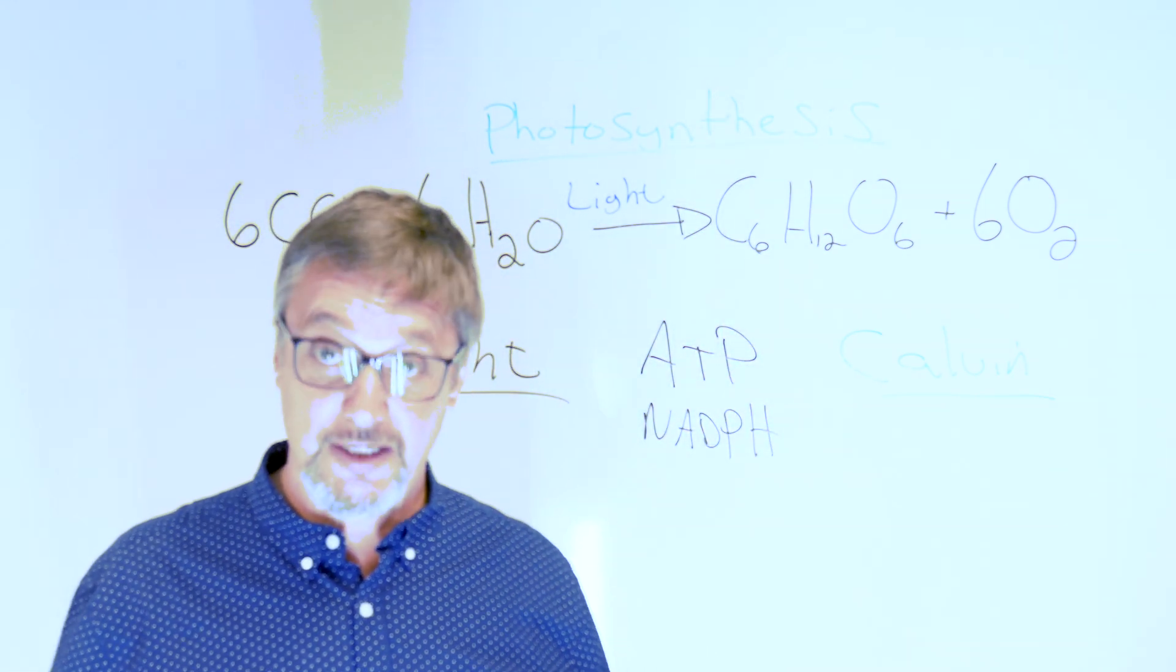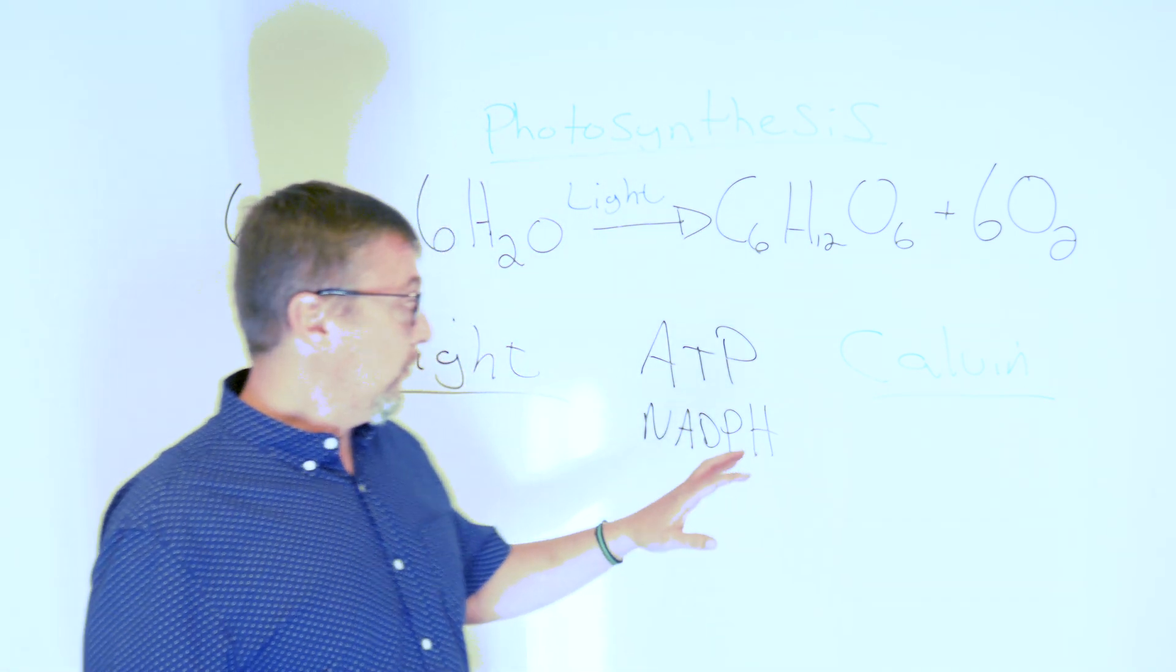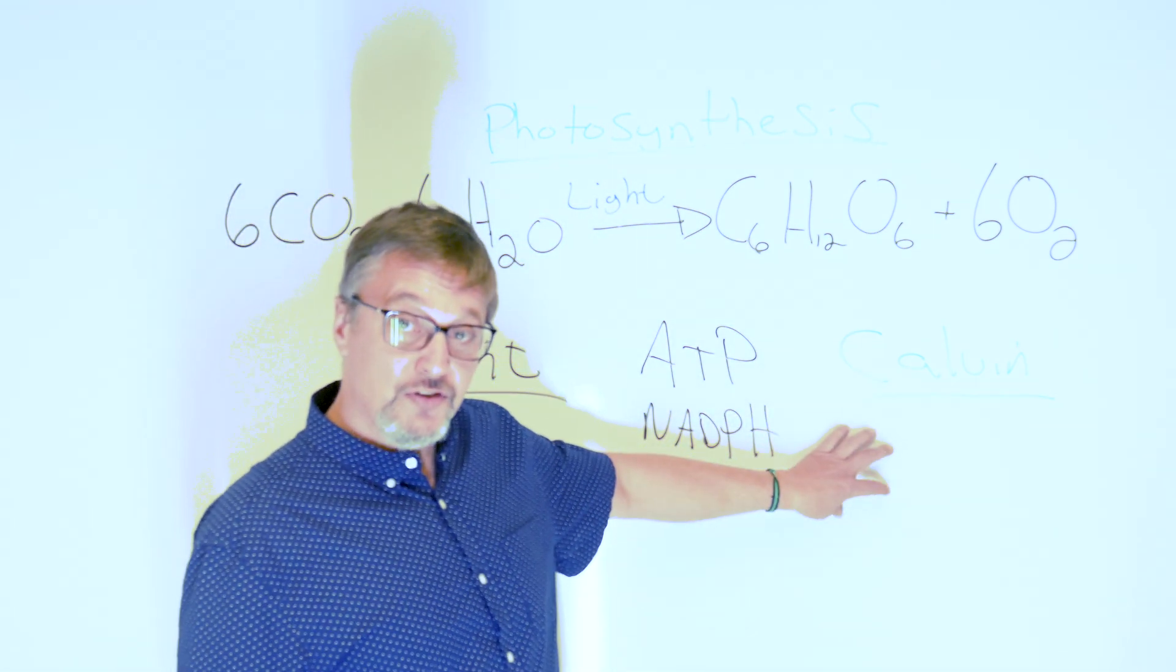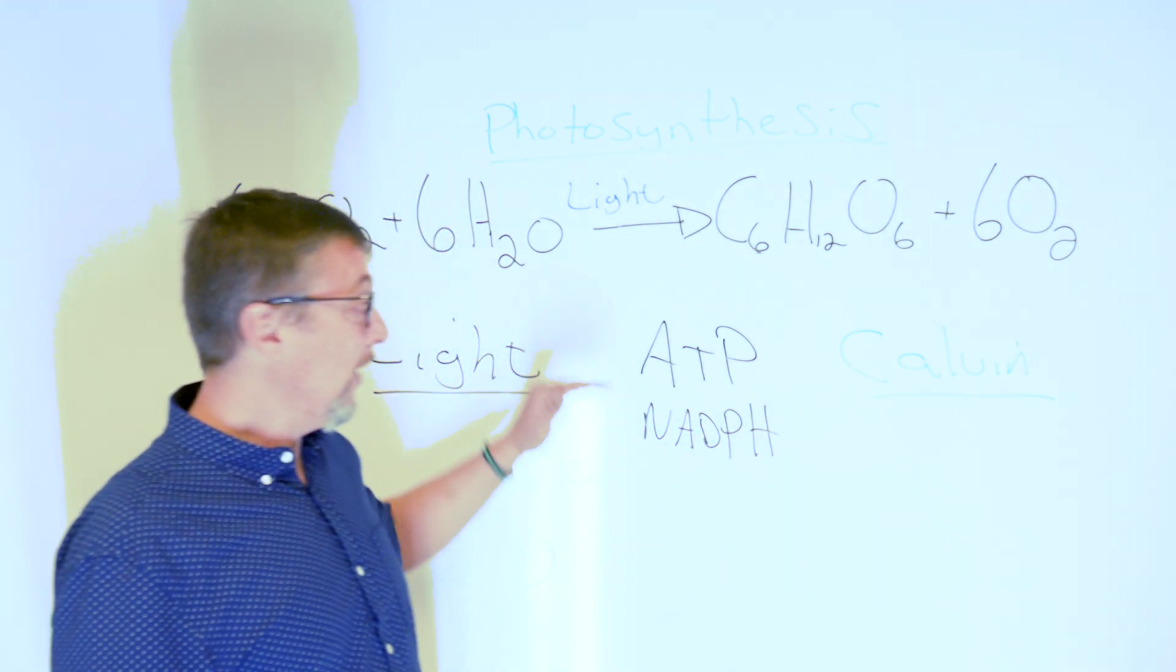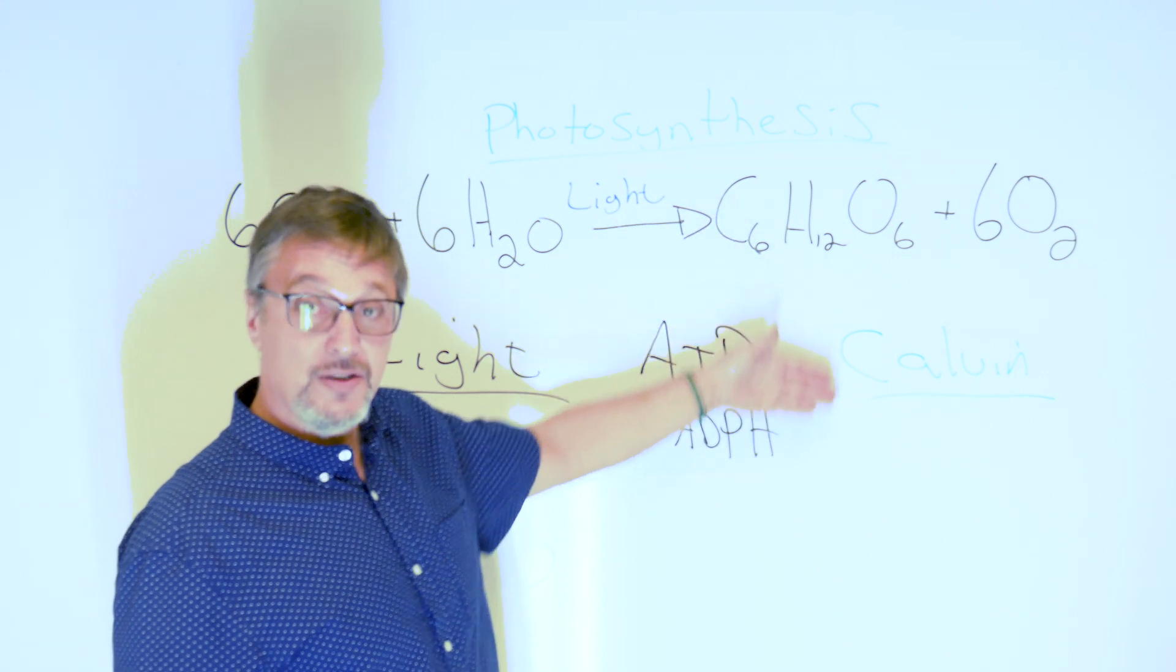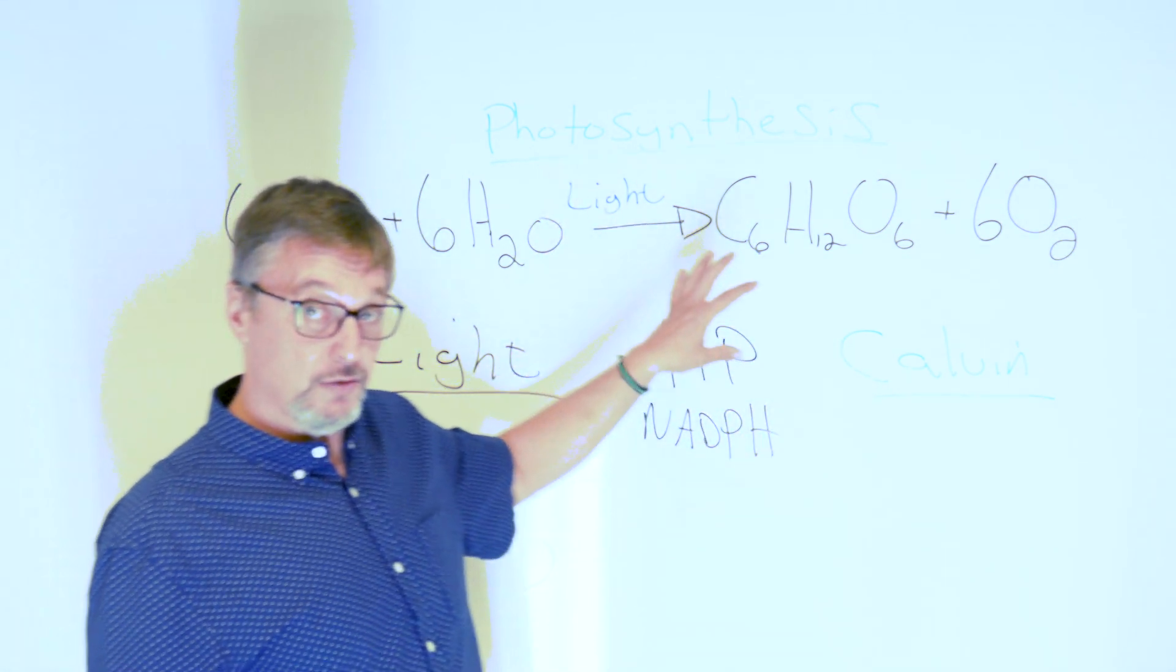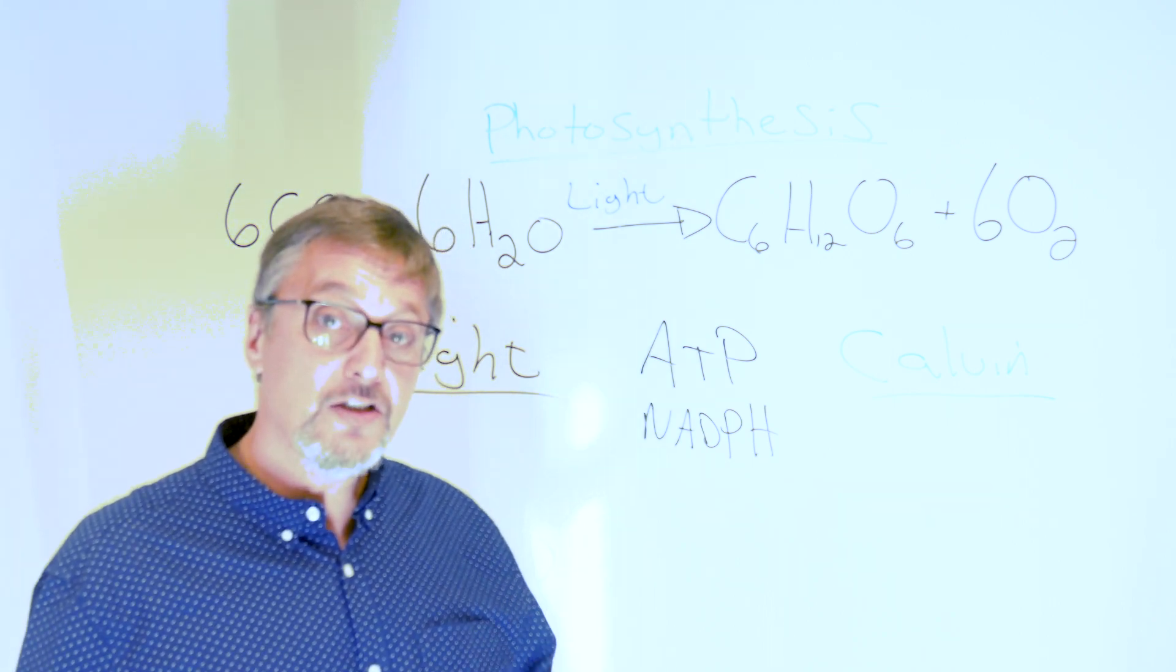The thing to understand is that no matter how much CO2 you give, if your plants don't have the chemical energy they get from light, then the Calvin cycle can't go any faster. So light is the limiting factor, not CO2. You need to be having at least 700 PPFD in your grow area.